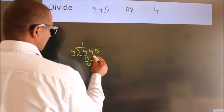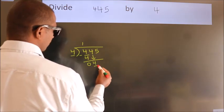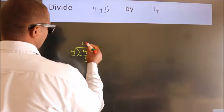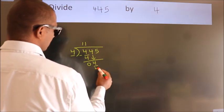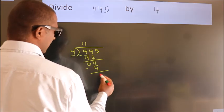After this, bring down the beside number. So 4 down. So 4. When do we get 4? In the 4 table. 4 once is 4. Now we subtract. We get 0.